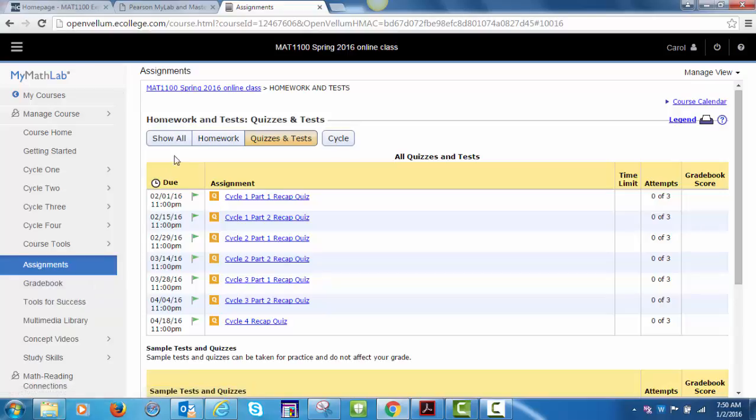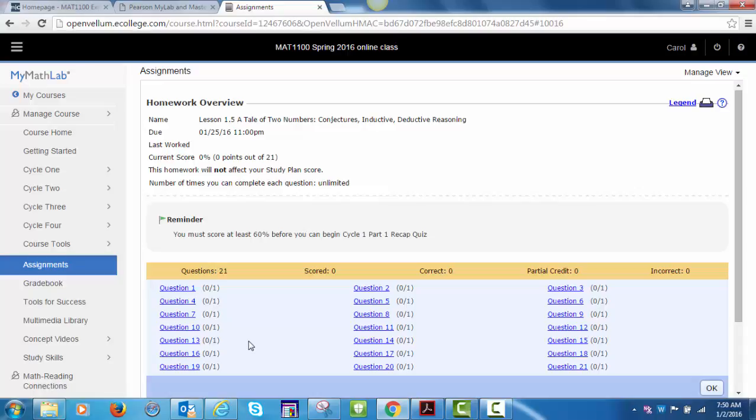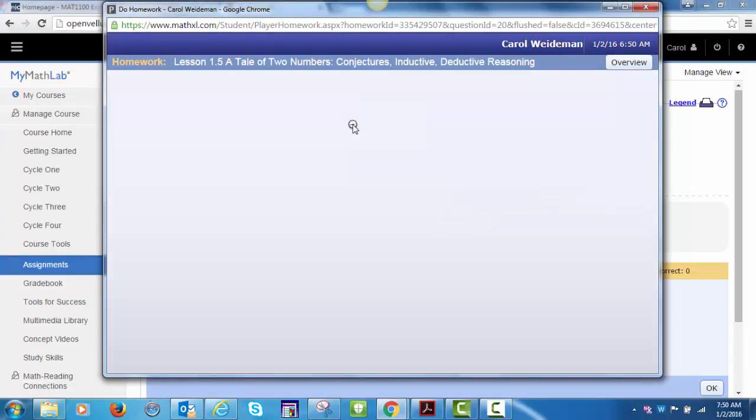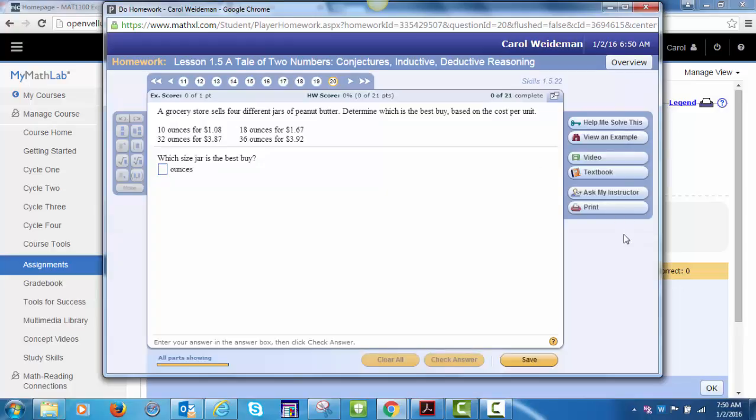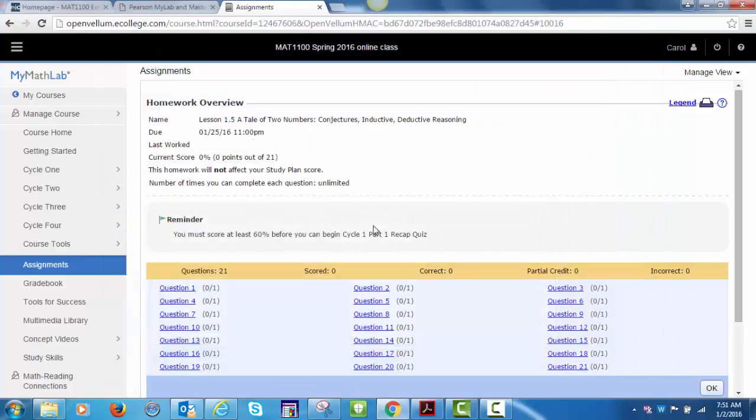Each homework problem has several learning aids available. The variety of learning aids varies from problem to problem. The Ask My Instructor option will send me an email with the exact problem you are working on. It is helpful for you to give me some information about what you are having trouble with. Note, there are no learning aids available on the quizzes. The chapter quizzes in MyMathLab are based on pools of questions, so you may not get the same questions on each attempt. You have three attempts for each MyMathLab quiz, and your highest score will be used.